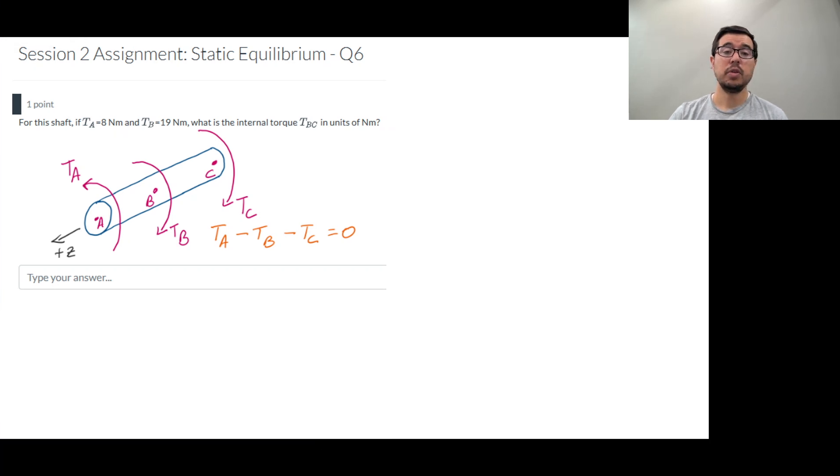In this problem we have torsional loading of a shaft. We see three external torques applied to this rod or shaft at locations A, B, and C.